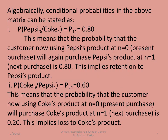We will illustrate the diagrams algebraically. The conditional probabilities in the transition matrix can be stated as: the probability P(Pepsi|Pepsi), P11 = 0.80, as stated in the problem. This means that the probability that a customer currently using Pepsi's product at N=0 (present purchase) will again purchase Pepsi's product at N=1 (next purchase) is 0.80. This implies retention to Pepsi's product.